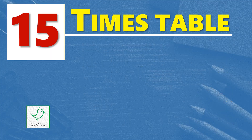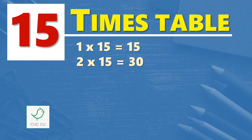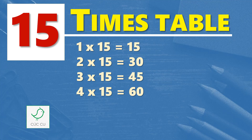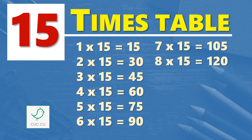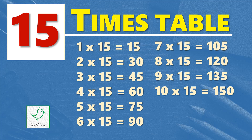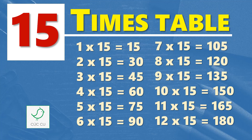Fifteen times table. One times fifteen is fifteen, two times fifteen are thirty, three times fifteen are forty-five, four times fifteen are sixty, five times fifteen are seventy-five, six times fifteen are ninety, seven times fifteen are one hundred and five, eight times fifteen are one hundred and twenty, nine times fifteen are one hundred and thirty-five, ten times fifteen are one hundred and fifty, eleven times fifteen are one hundred and sixty-five, twelve times fifteen are one hundred and eighty.